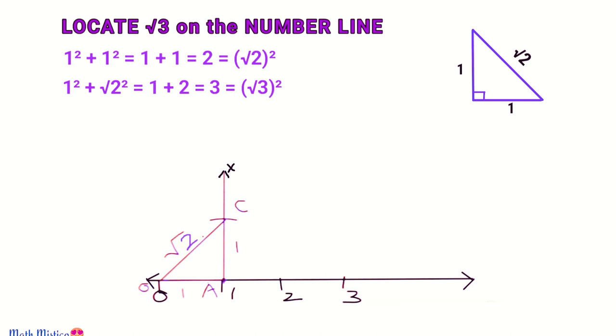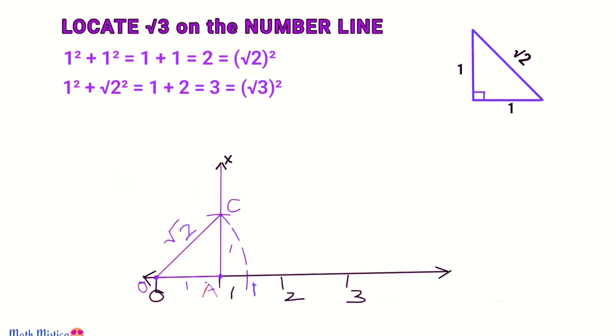Now this distance we have to take on the number line. With the help of my compass, I am going to measure this distance OC. Now using center O and this radius, I will draw an arc downwards to intersect the number line at point B. So OC and OB are of length √2. Our representation of √2 is ready.